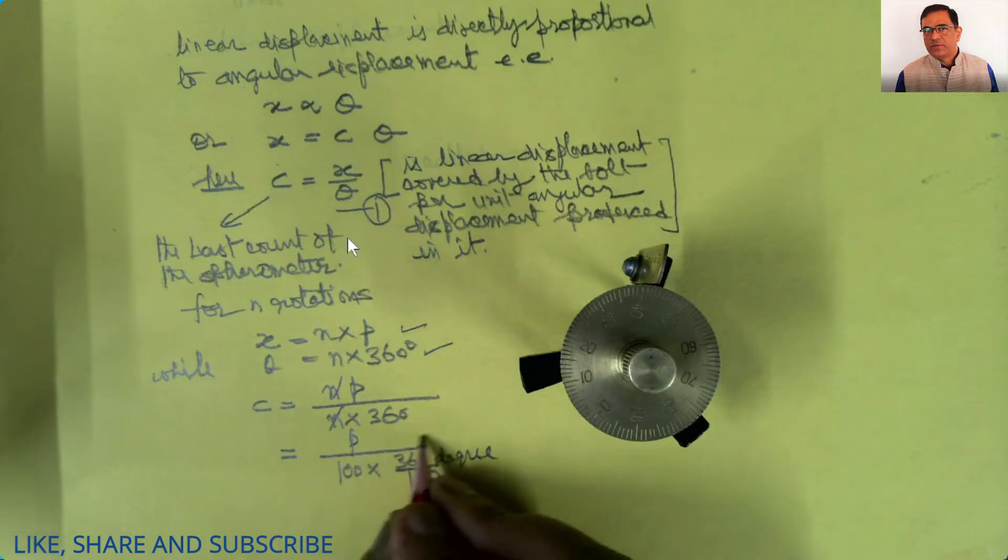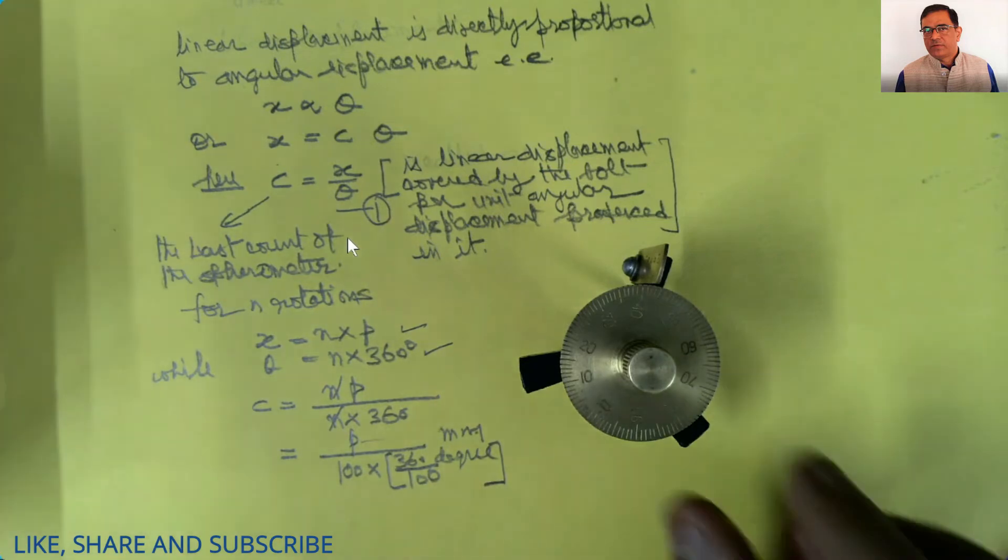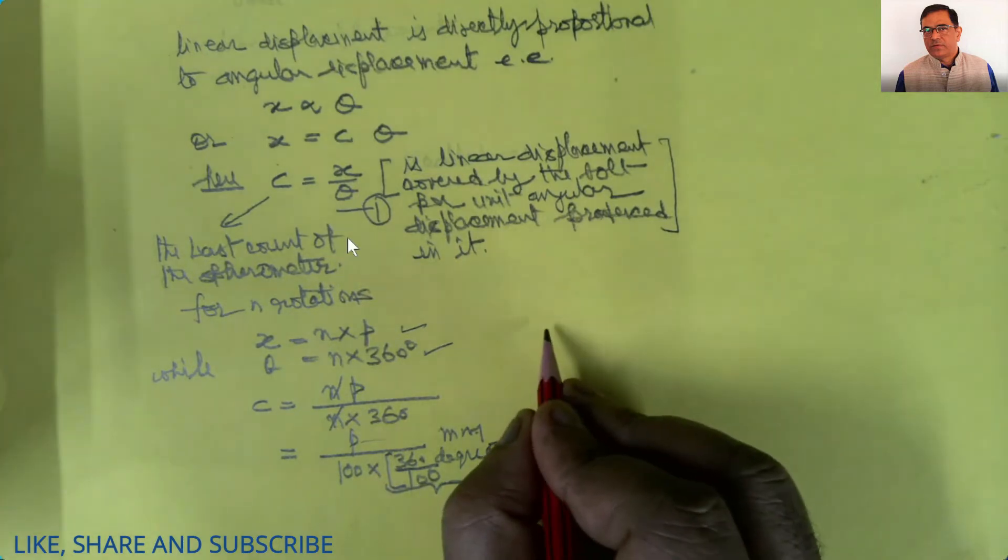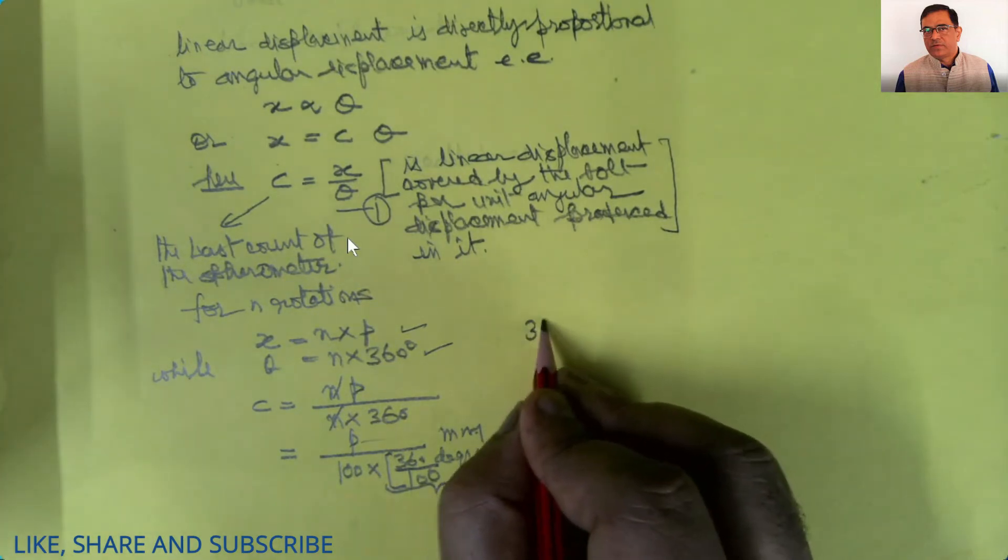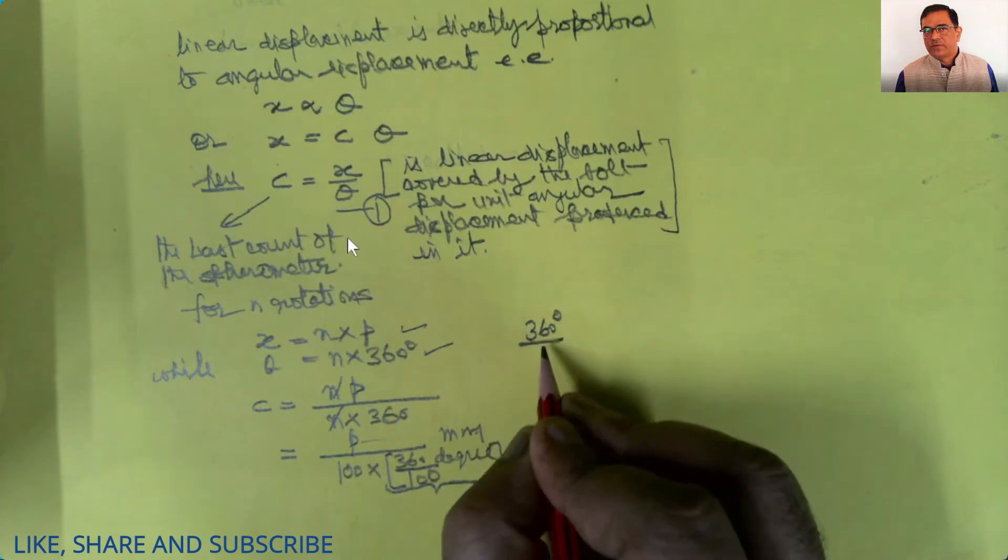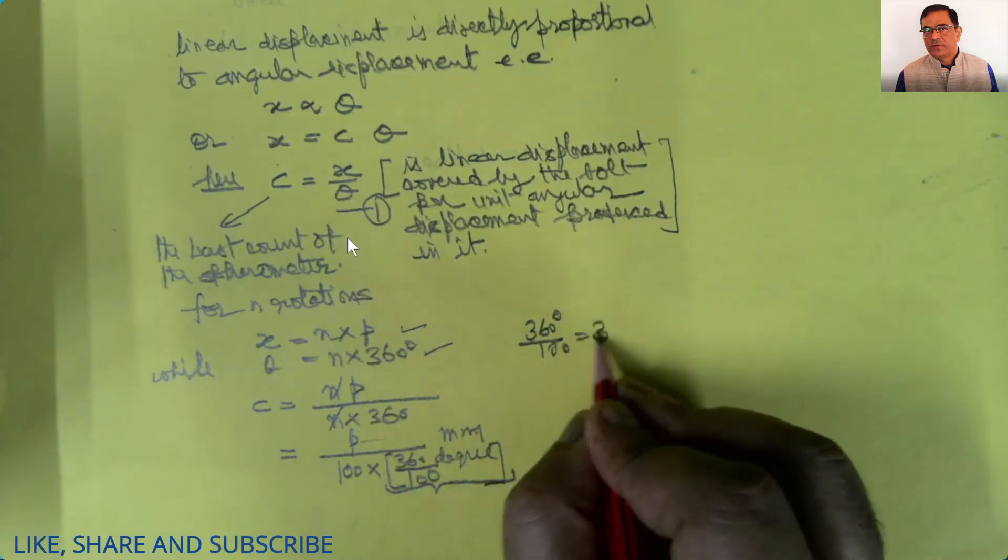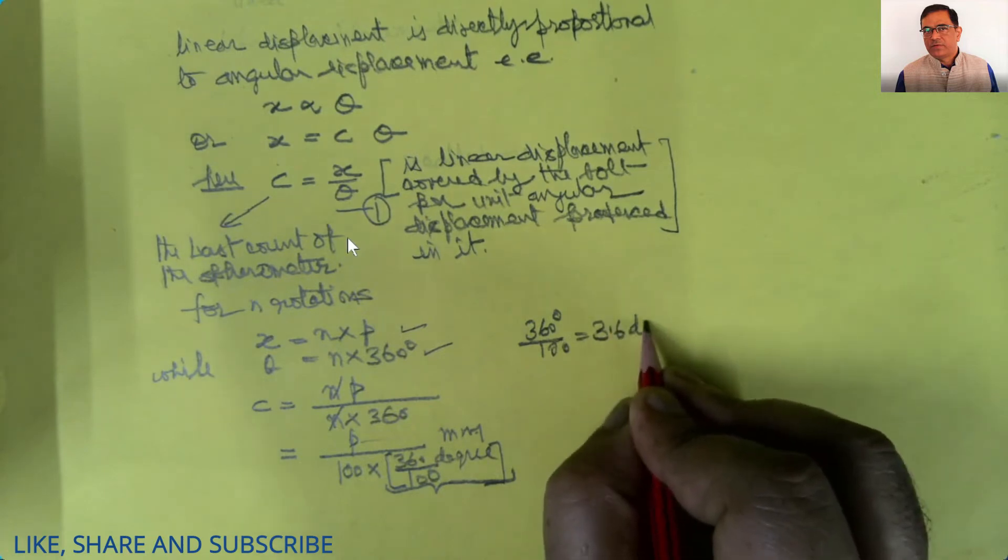The p is in millimeters. Let's write the millimeter unit as well. This term in the bracket, let's rewrite it again: 360 degrees by 100, which equals 3.6 degrees.